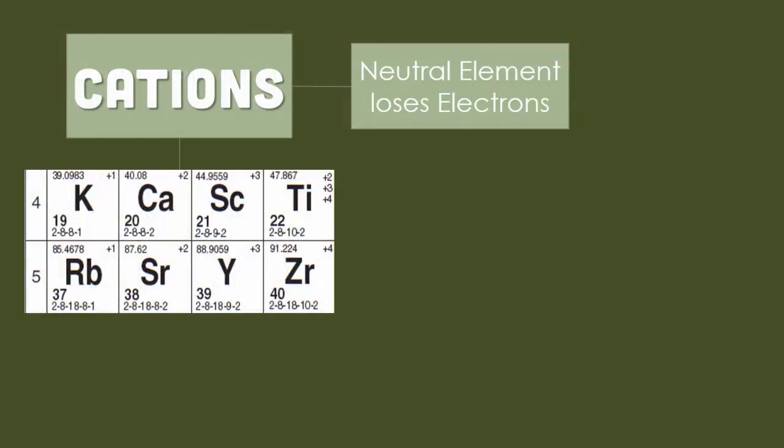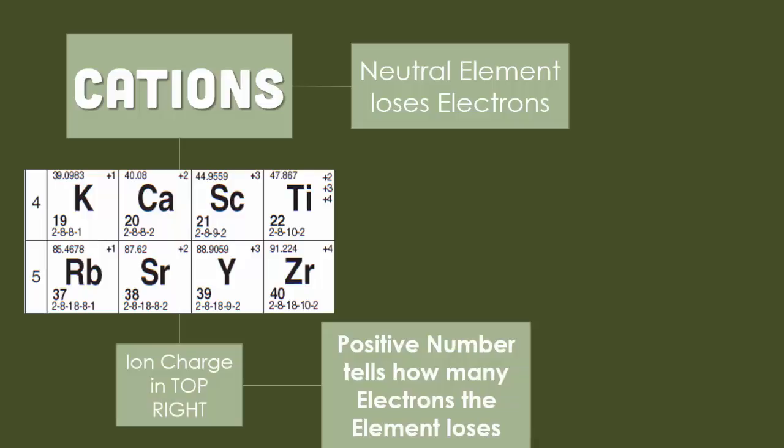Okay, so cations, again, these are the positive ions, they're neutral elements that have lost electrons. The ion charge is in the top right corner, and the positive number tells us how many electrons the element actually lost.